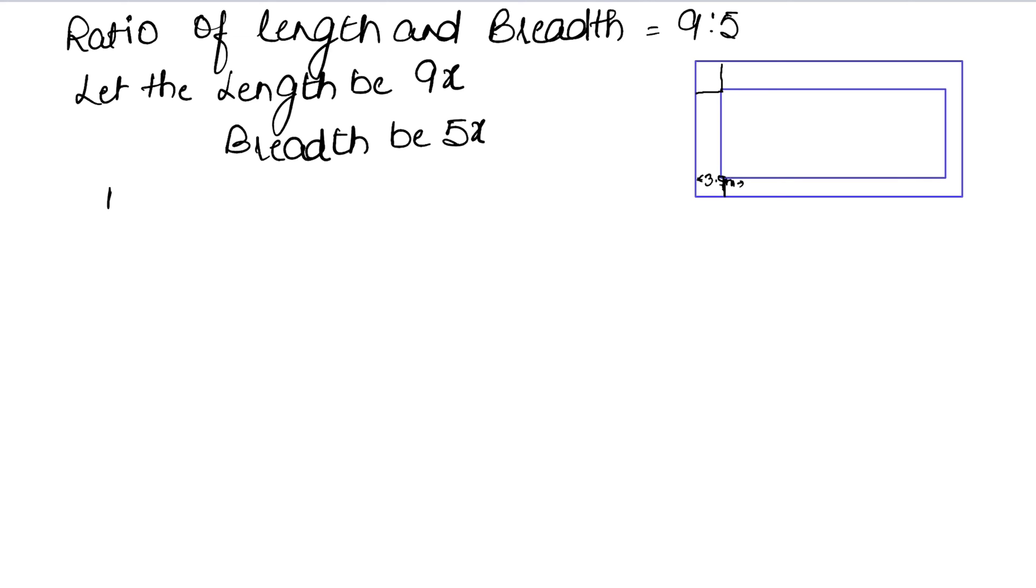The area of path is given as 1911 square meters, and we have a 3.5 meter path. Now we need to find the inner dimensions. Why do we need the inner dimensions? Because we have the area of path, but we don't have the inner dimensions directly - only the outer ratios. If we can find the inner dimensions, we can apply the area of path formula.